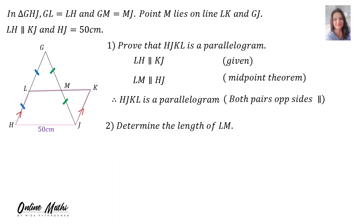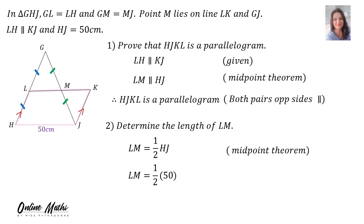The next question says: determine the length of LM. LM is half of HJ, and the reason is the midpoint theorem. Therefore, since HJ was 50, LM is half of 50, which is 25 centimeters.